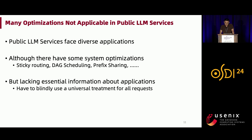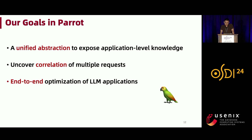Although the systems community has studied many optimizations for different types of applications, it is still hard for public LLM services to leverage these optimizations because they have no knowledge about the application. They don't know which type of optimization should be applied for a specific application. So they have to blindly apply universal treatment to all requests — for example, just minimizing the latency of each individual request. This motivates us to design Parrot. In Parrot, we want to design a unified abstraction that is natural for LLM developers but powerful enough to expose application-level knowledge to the LLM service.